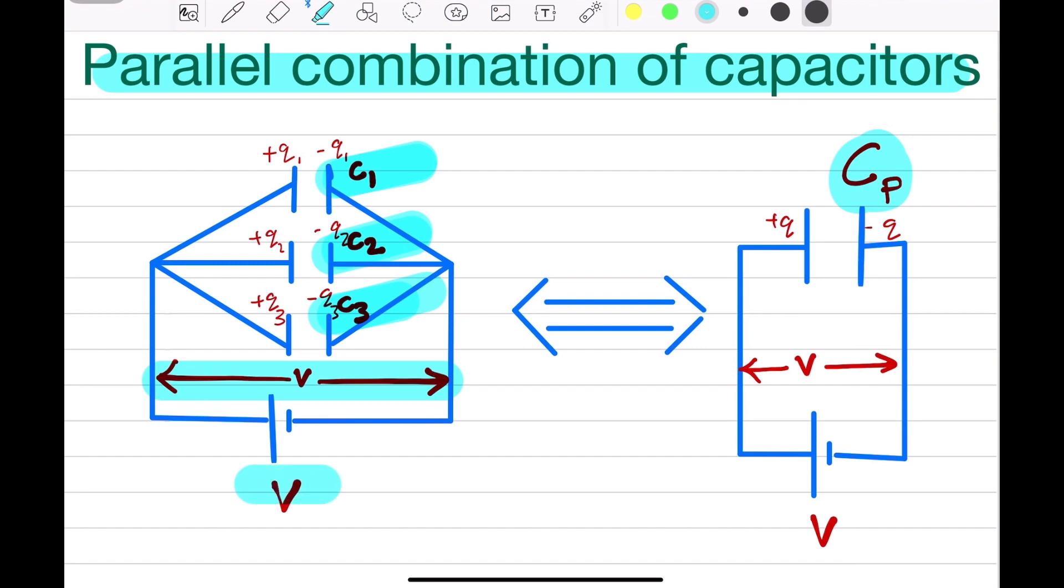Now, say the charge in capacitor C1 is Q1, charge in capacitor C2 is Q2, charge in capacitor C3 is Q3. Total charge in the capacitor, let it be Q.